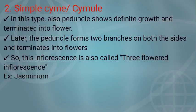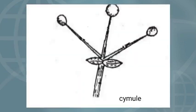Simple cyme or Cymule: in this type, the peduncle shows definite growth and terminates into a flower. Later, the peduncle forms two branches on both sides which also terminate into flowers. So this inflorescence is also called three-flowered inflorescence. Example: Jasminum. In the diagram, the middle peduncle terminates into a flower, then forms two lateral branches at the basal region which also terminate into flowers, making it look like a three-flowered inflorescence. After these lateral branches, no further branches form.